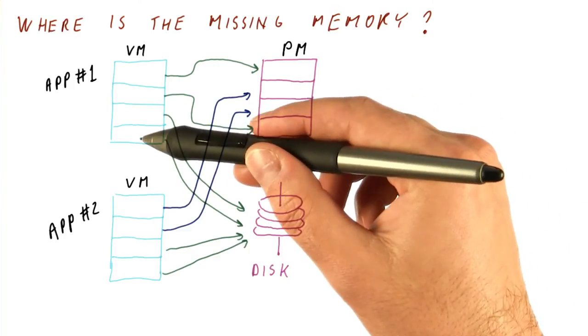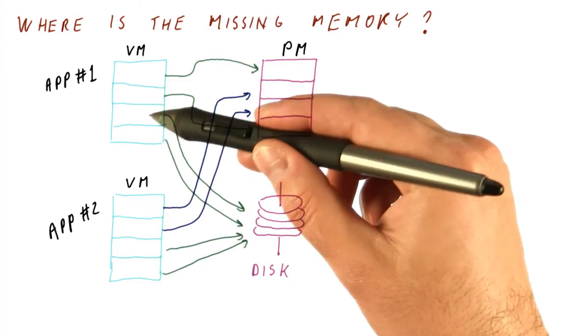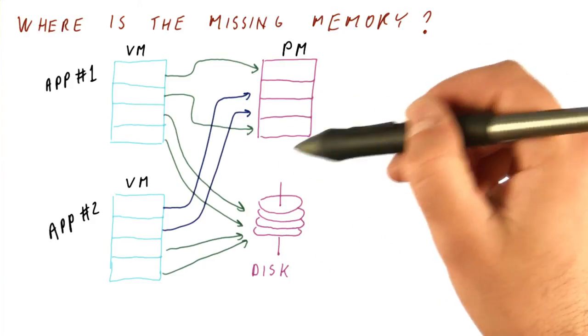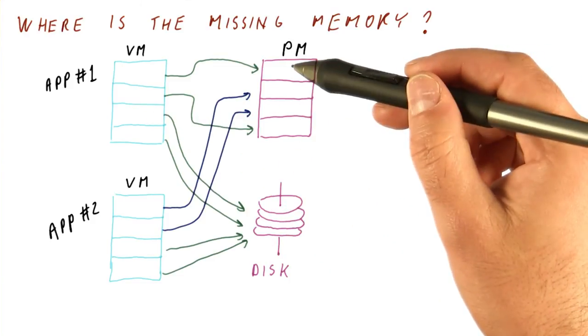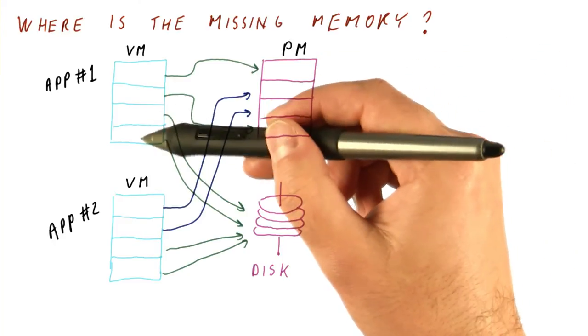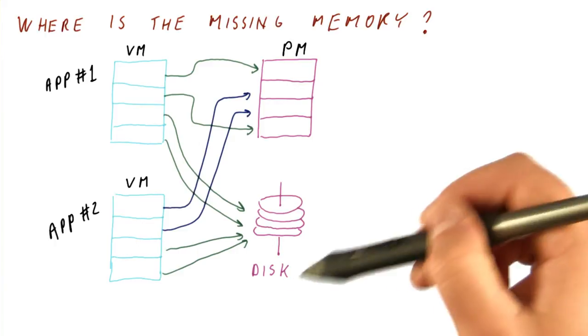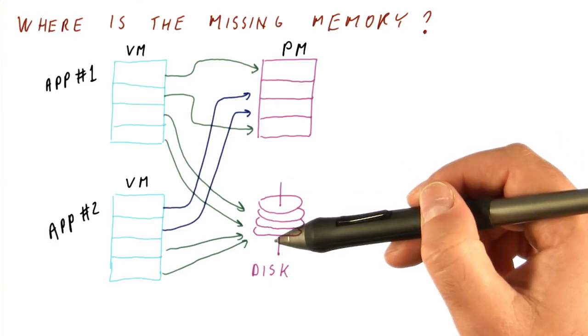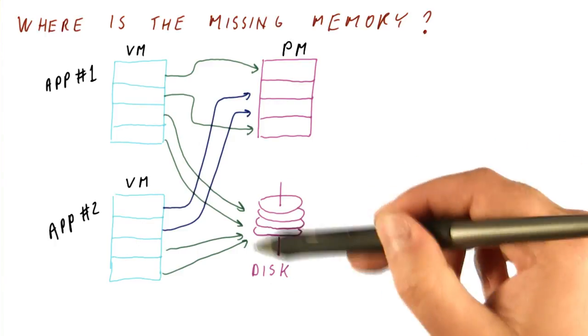These pages cannot be directly accessed by the processor, because the processor can only really access through loads and stores the physical memory. So if the processor ever tries to access one of these, they need to be brought from the disk before they can be accessed. We will shortly see how that works.